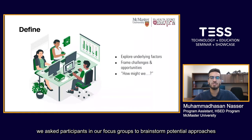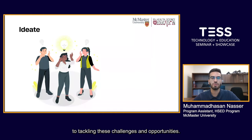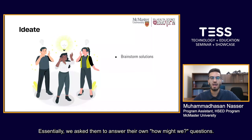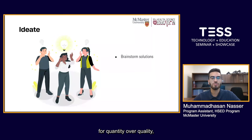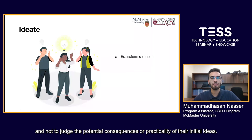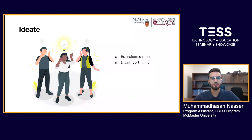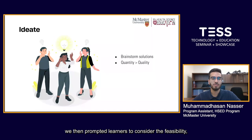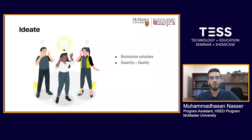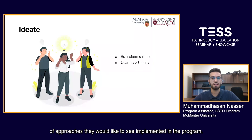In the Ideate stage, we asked participants in our focus groups to brainstorm potential approaches to tackling these challenges and opportunities — essentially, to answer their own 'how might we' questions. At first, we asked learners to engage their ideas with a focus on quantity over quality and not to judge the potential consequences or practicality of their initial ideas. After collecting many ideas, we then prompted learners to consider the feasibility and impact of each idea and to create a hierarchy of approaches they would like to see implemented in the program.